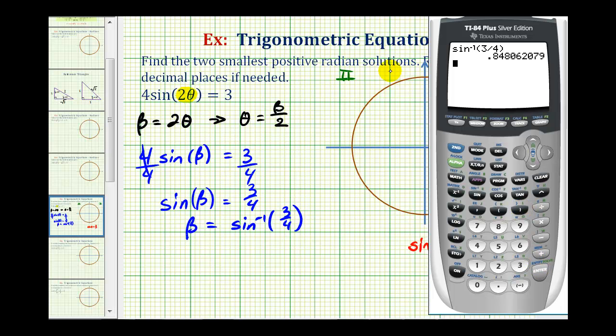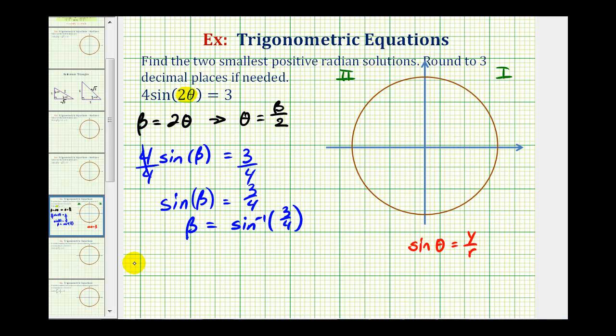Now we are asked to round our solution to three decimal places, but this is beta, not theta. So to avoid any rounding errors, let's round this to four decimal places. So one solution for beta is approximately 0.8481. So we'll call this beta sub one. Let's go ahead and sketch this angle in the first quadrant.